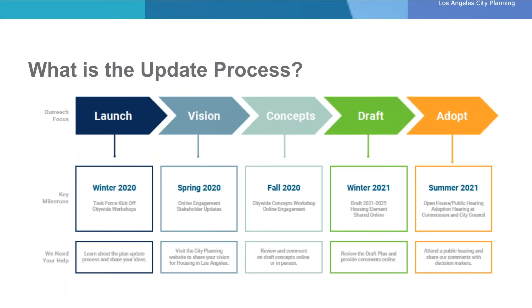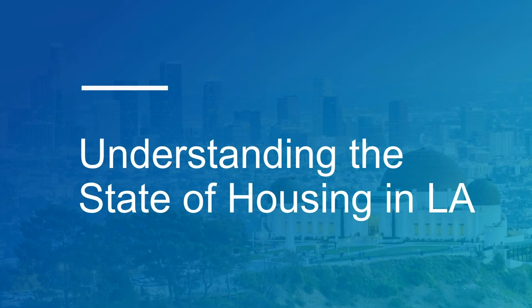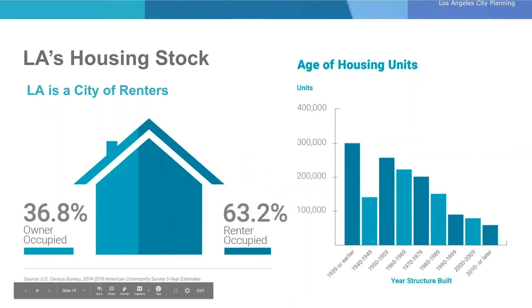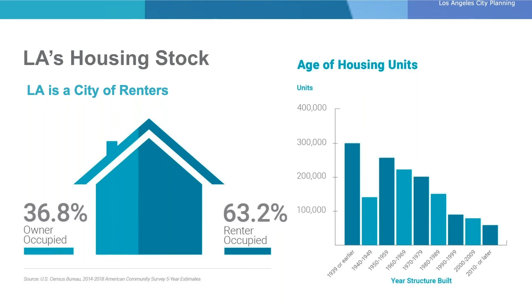Before diving into the goals and objectives for the housing element update, let's take stock of the state of housing and the factors that determine costs, needs, and priorities. Los Angeles is a city of renters, with over 63% of residents living in housing units they do not own. LA also has an aging housing stock with a significant percentage of units built before 1960. While it may seem like LA has experienced a building boom, in reality only 25% of housing units in LA were built after 1980, making it important to adequately respond to the evolving needs of LA's growing population.